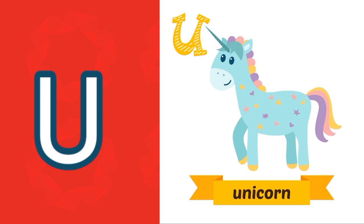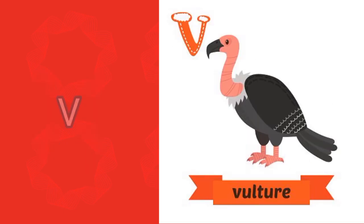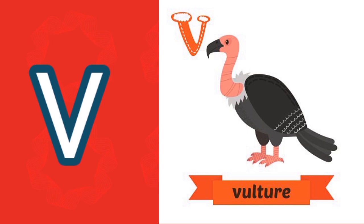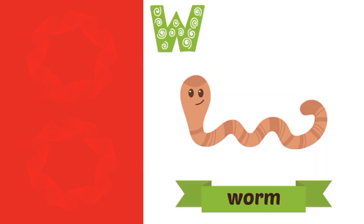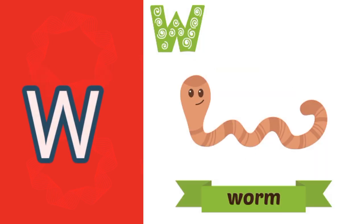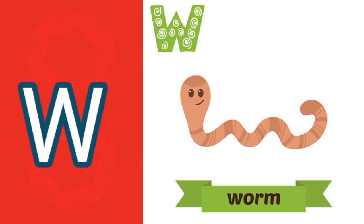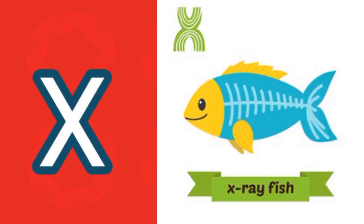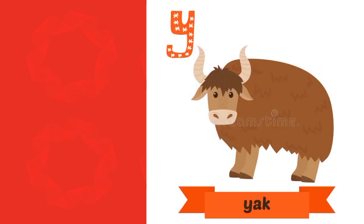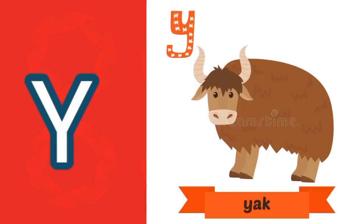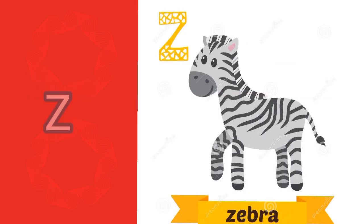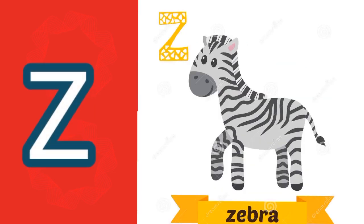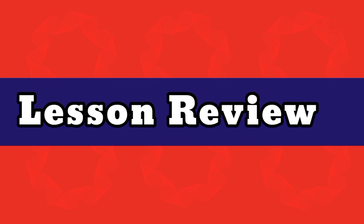U sound, A — unicorn. V sound, V — vulture. W sound, W — worm. X sound, X — x-ray fish. Y sound, Y — yuck. Z sound, Z — zebra. Lesson review.